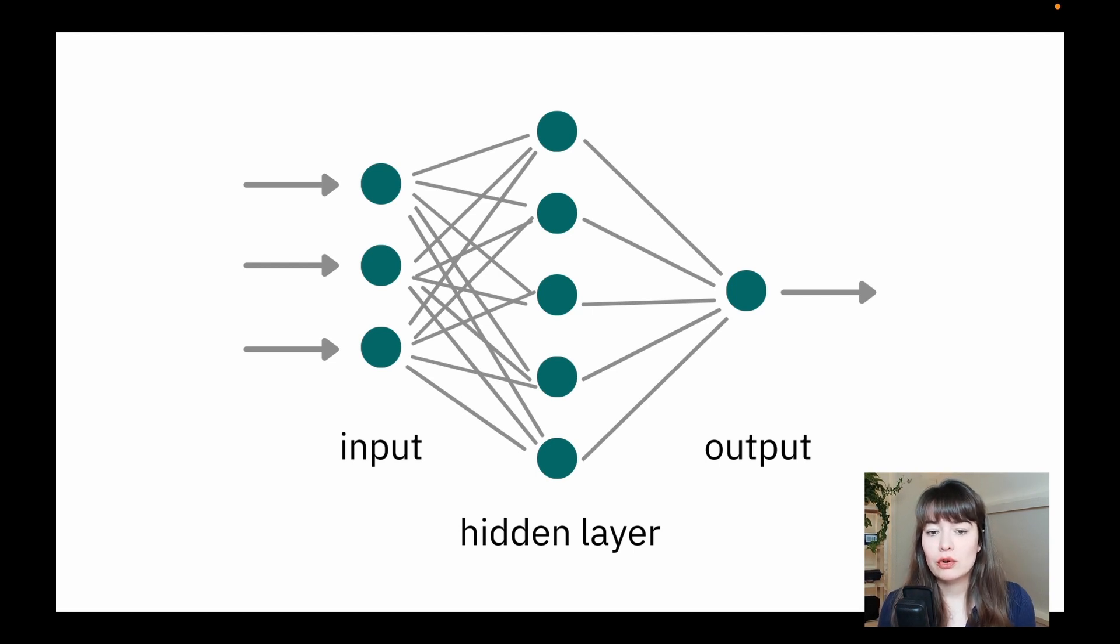In a normal feed-forward neural network, we have an input layer with a bunch of neurons, we have hidden layers, could be one or more than one, and we also have some neurons, and we have an output layer. And all of these neurons in a feed-forward neural network are connected with each other.